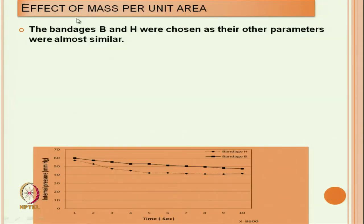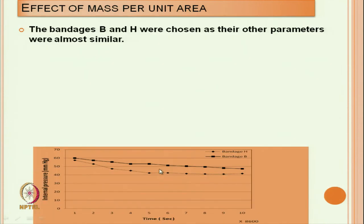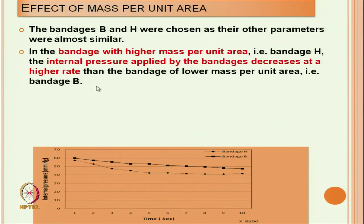Now, effect of mass per unit area of bandage. We have taken bandage B and bandage H. Bandage B has a mass per unit area of 257 and bandage H is heavier at 378. Other parameters are almost the same except the bandage mass per unit area. The bandage with higher mass per unit area, that is bandage H, shows that the internal pressure applied by the bandage decreases.